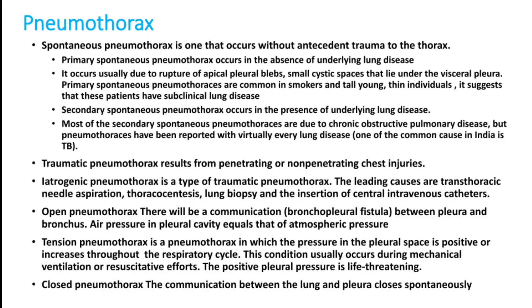It can occur in any other type of lung disease or even in normal lungs. Traumatic pneumothorax occurs mainly after penetrating chest injuries. Iatrogenic pneumothorax can also occur during central line insertion or aspiration of pleural effusion. Open pneumothorax means there is a communication — a bronchopleural fistula — between the pleura and the bronchus.